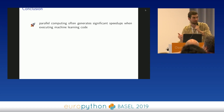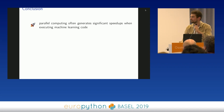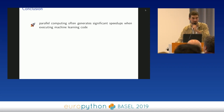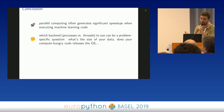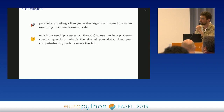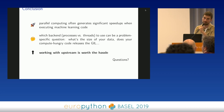In conclusion: parallel computing makes things faster in scikit-learn, as shown in the benchmarks — though it's problem-specific and you have to try different backends to see what works better depending on whether your code is CPU-bound or IO-bound. Also, working with upstream is worth the hassle. It makes the ecosystem safer, so please work with upstream.